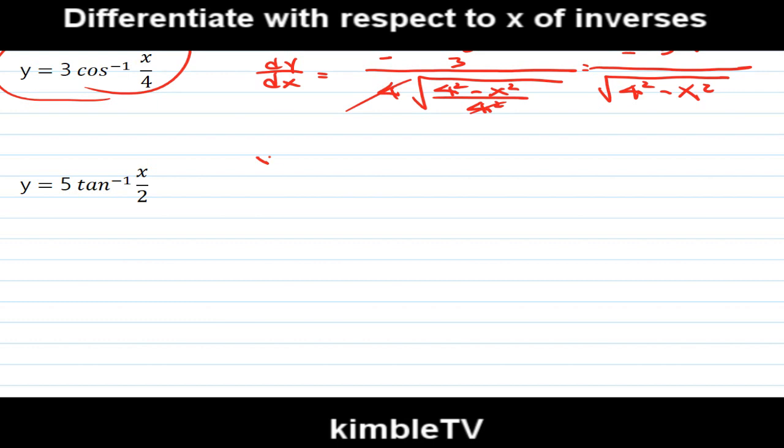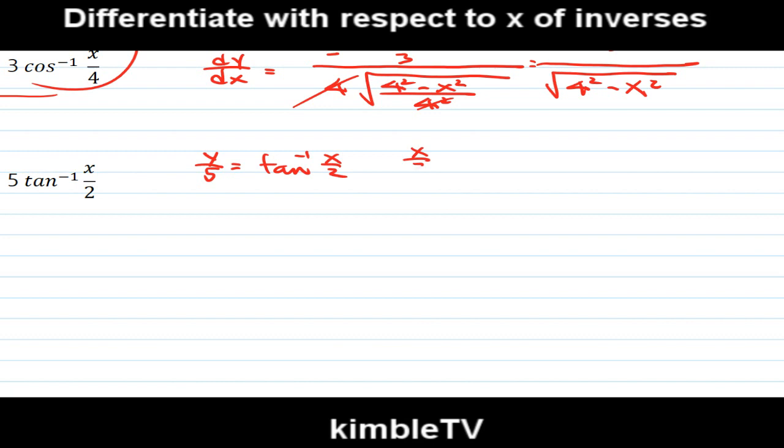And the next question: y = 5 tan⁻¹(x/2). Differentiated. Sorry, x/2 should be made the subject. x/2 = tan(y/5). Differentiated.